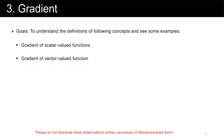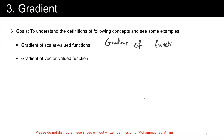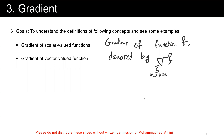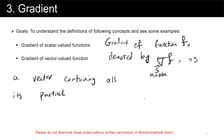We start with the definition of gradient of a scalar valued function and gradient of a vector valued function. In general, the gradient of function f is denoted by nabla f. Nabla f is the gradient of function f, and it is a vector that contains all its partial derivatives.